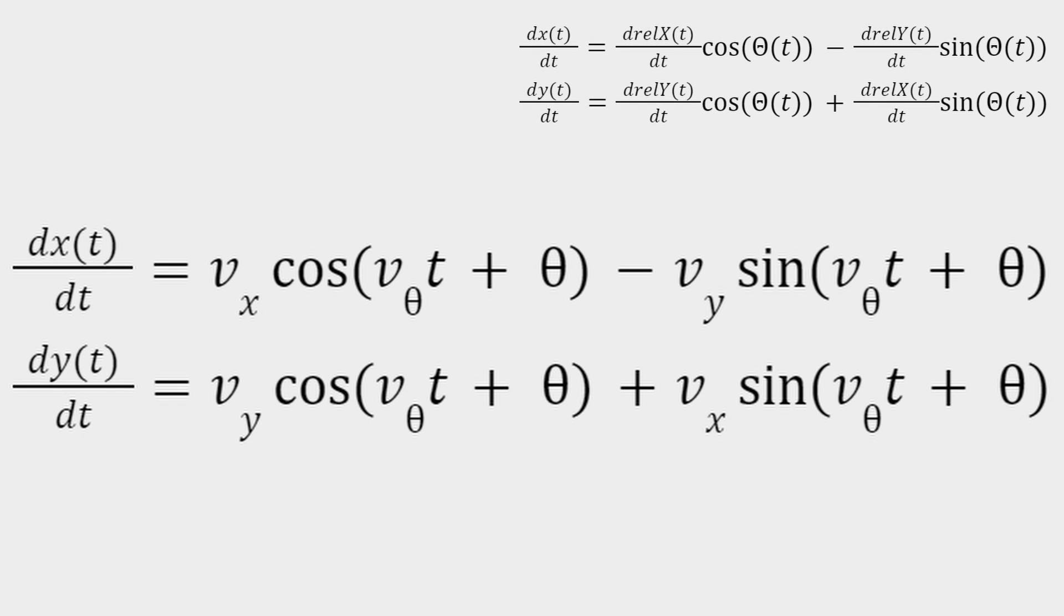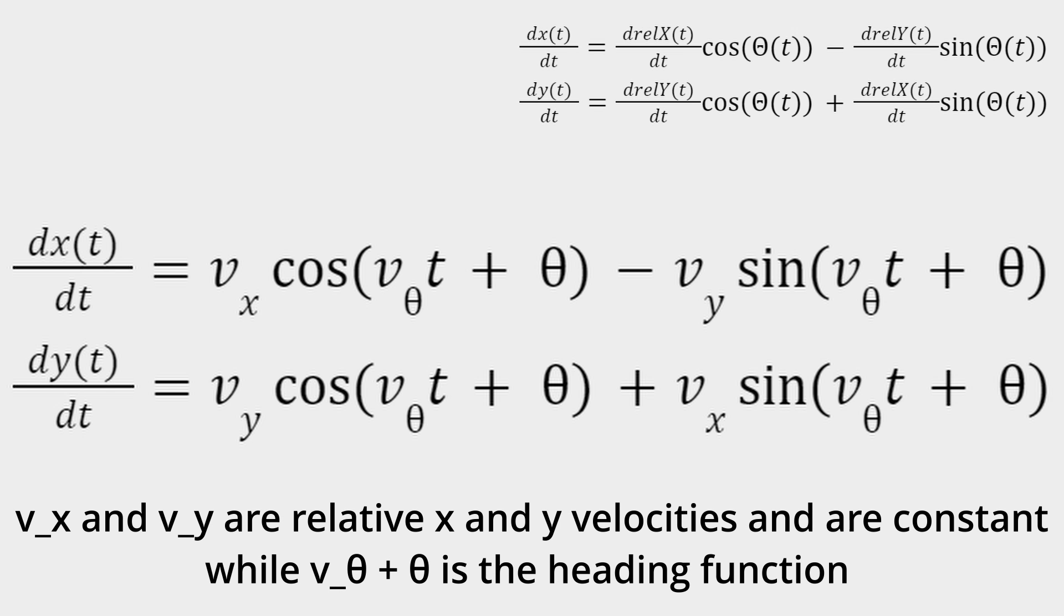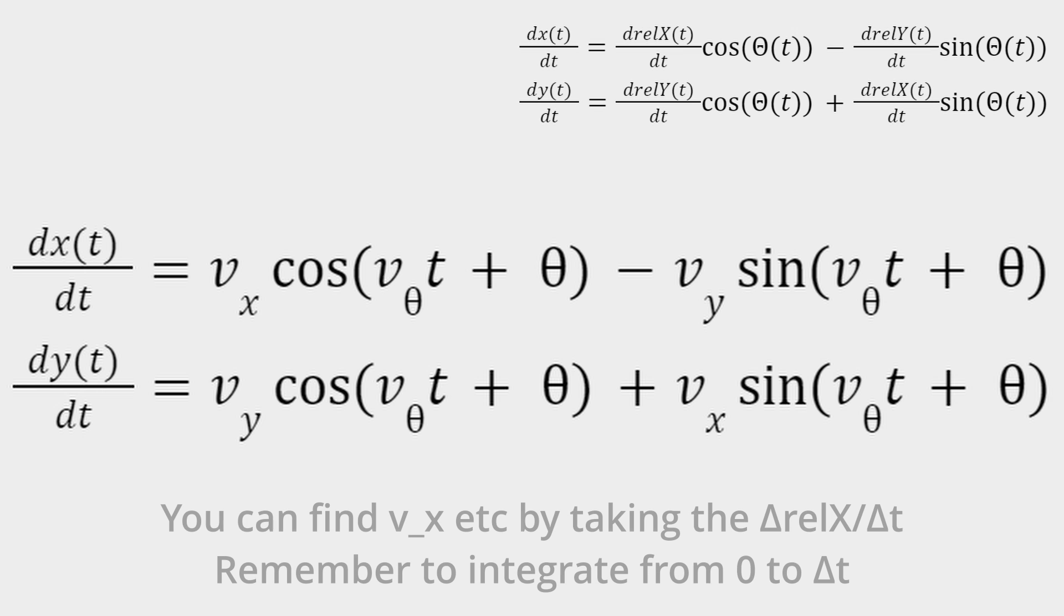Here is the equation for constant velocity arcs. Notice that the velocity functions are constant, and that the slope of the heading function is also constant. This is where it gets its name. If you were to integrate this, you would find that it's actually equivalent to the value we found in the last video using a geometric approach. I will leave this as an exercise for the viewer.